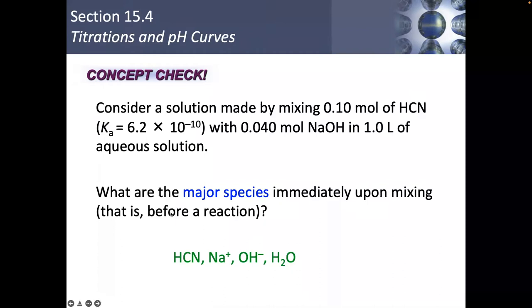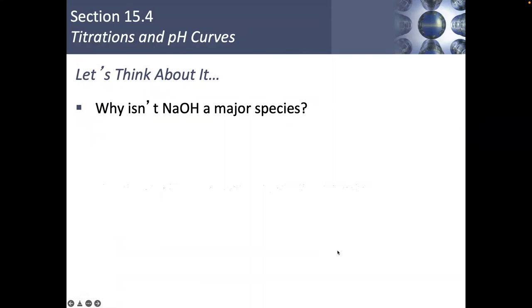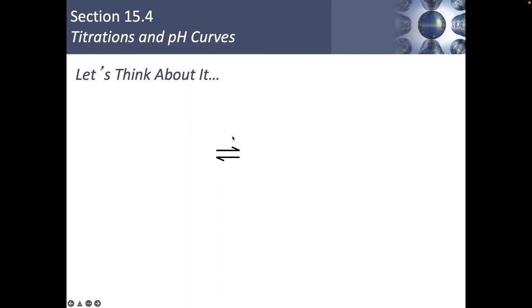Going back to the original question: we had HCN because it doesn't dissociate very much. We have Na⁺ and OH⁻ because it's a strong base that dissociates completely. And of course water is going to be a major species because we're mixing in aqueous solution. So that's why NaOH, hydronium, and cyanide ions were not major species right when we mixed.